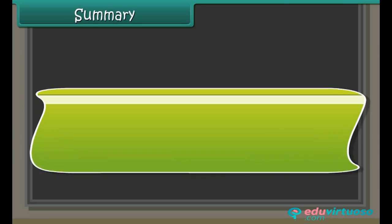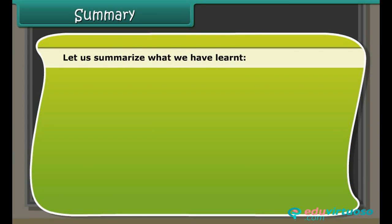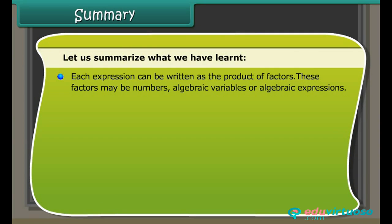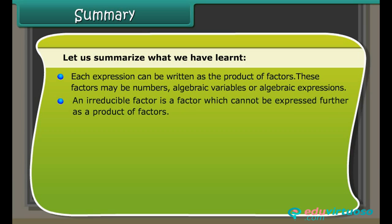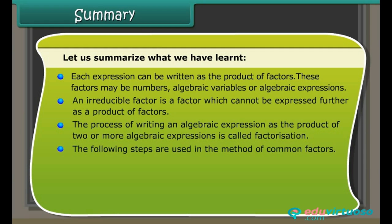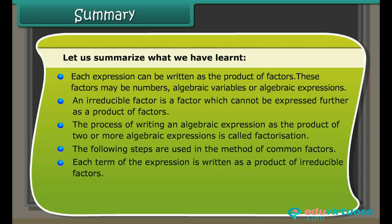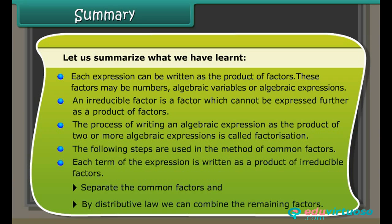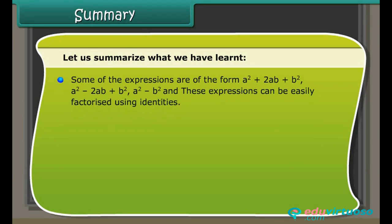Summary: let us summarize what we have learned. Each expression can be written as the product of factors. These factors may be numbers, algebraic variables, or algebraic expressions. An irreducible factor is a factor which cannot be expressed further as a product of factors. The process of writing an algebraic expression as the product of two or more algebraic expressions is called factorization. In the method of common factors, each term is written as a product of irreducible factors, then common factors are separated and the remaining factors combined using the distributive law.